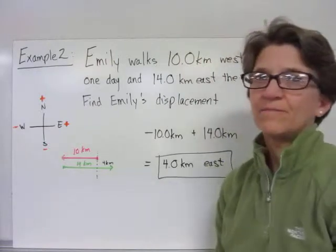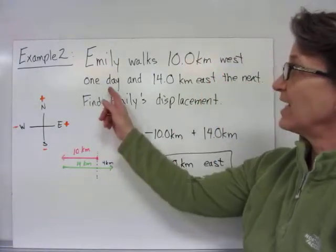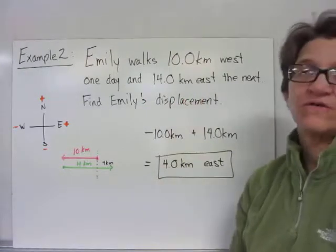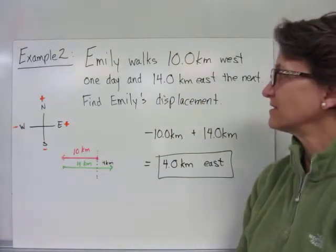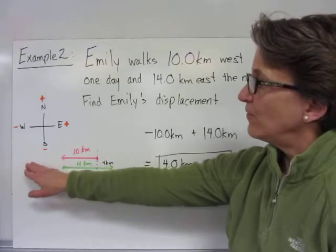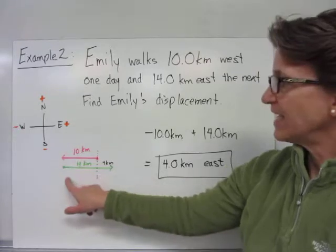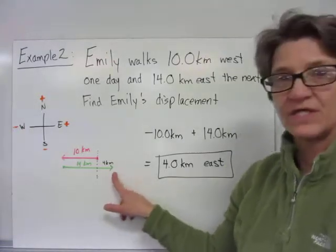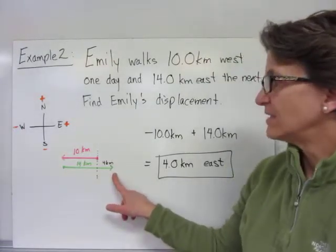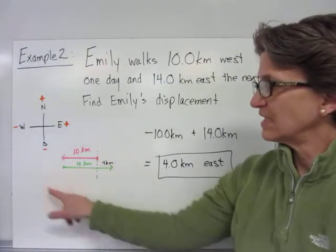In our second example, Emily walks 10 kilometers west one day, and then she heads 14 kilometers east the next. Find her displacement. She walks 10 kilometers west one day. The next day, she turns around and walks 14 kilometers east. Her net displacement is 4 kilometers. So we can see this graphically.